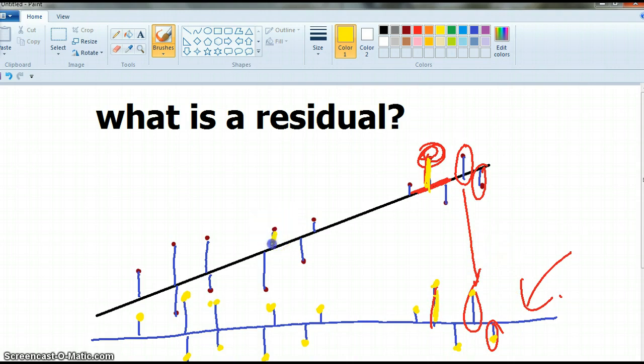So residuals, these lengths for every dot. So it's the difference between the actual data and InSight's model.